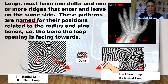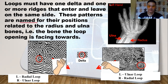Using the right hand, you can notice the arrow pinpointing towards the radius bone. Therefore, the figure is showing the radial loop. On the other figure, using the same right hand, the arrow is pinpointing towards the ulna bone. Thus, the figure is an ulnar loop.